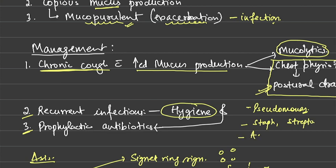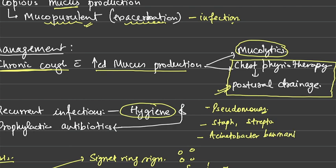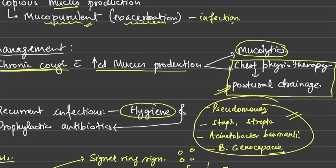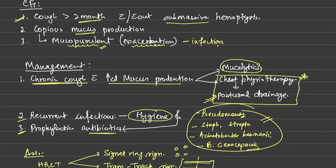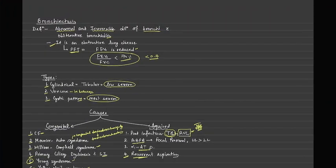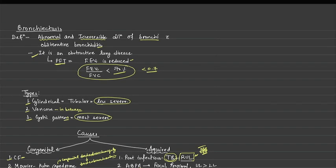Other organisms include Acinetobacter baumannii and Burkholderia cepacia. These four to five organisms cause recurrent infections and prophylactic antibiotics should be provided to break the vicious cycle. Inhaled tobramycin for 20 to 21 days is also effective. Knowing the causative organisms and appropriate antibiotics is essential in managing bronchiectasis.